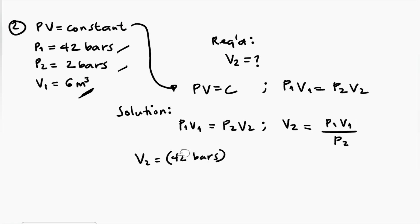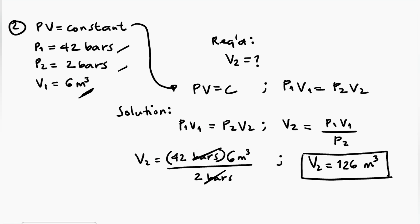Let me show you the units. So 42 bars times V sub 1 which is 6 cubic meters over 2 bars. The bars cancel out, so your final answer will be in cubic meters. For our volume at point two, we have 42 times 6 divided by 2, which gives us 126 cubic meters. This is our final answer for problem number two. So for our...